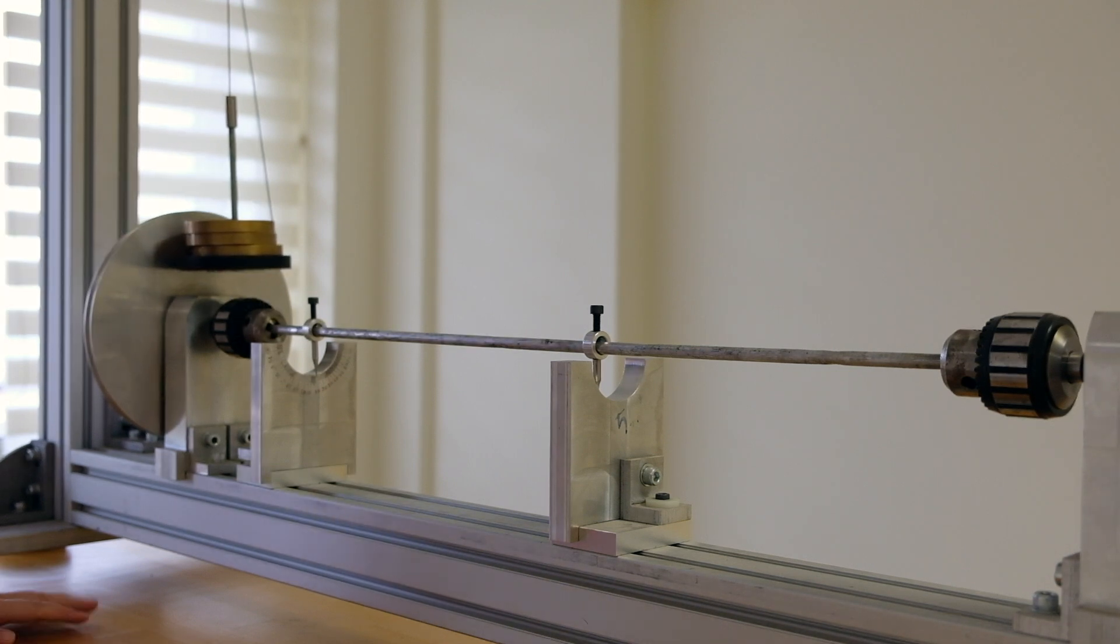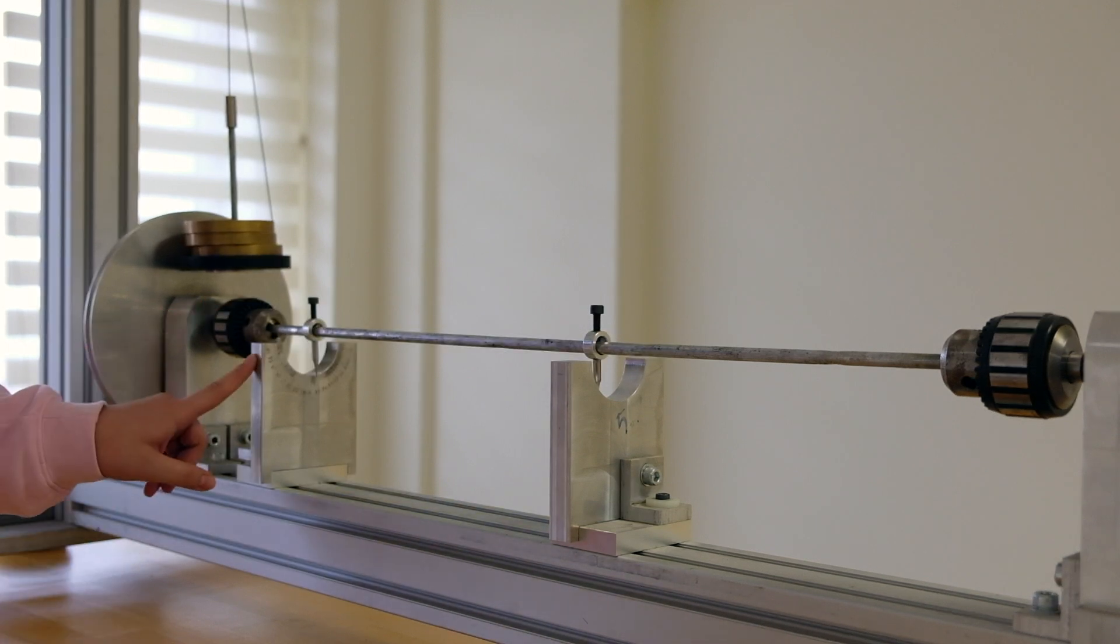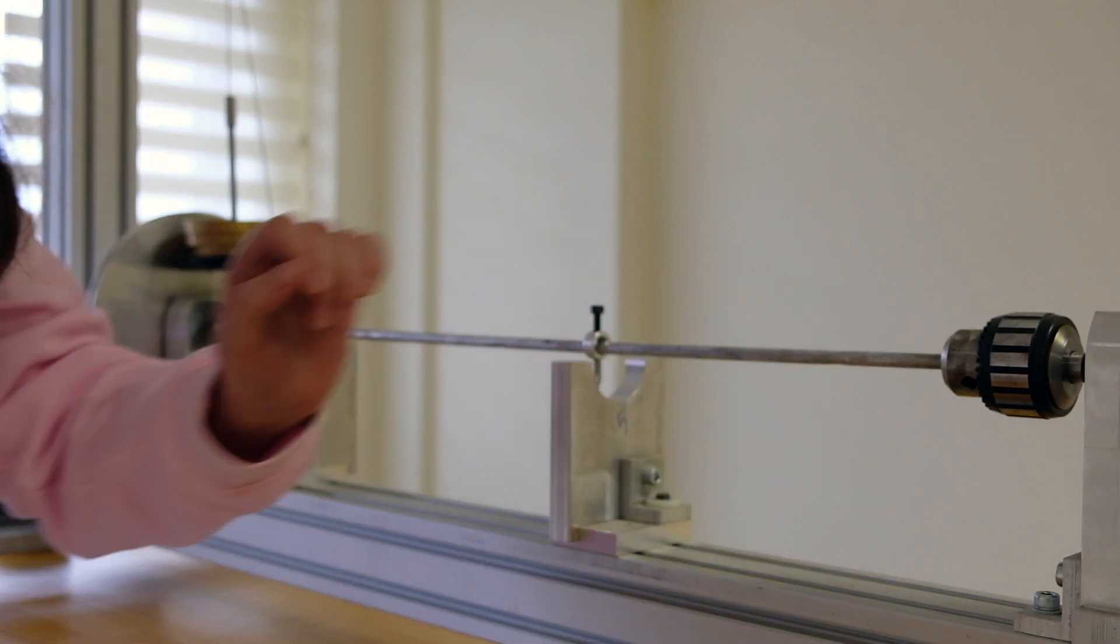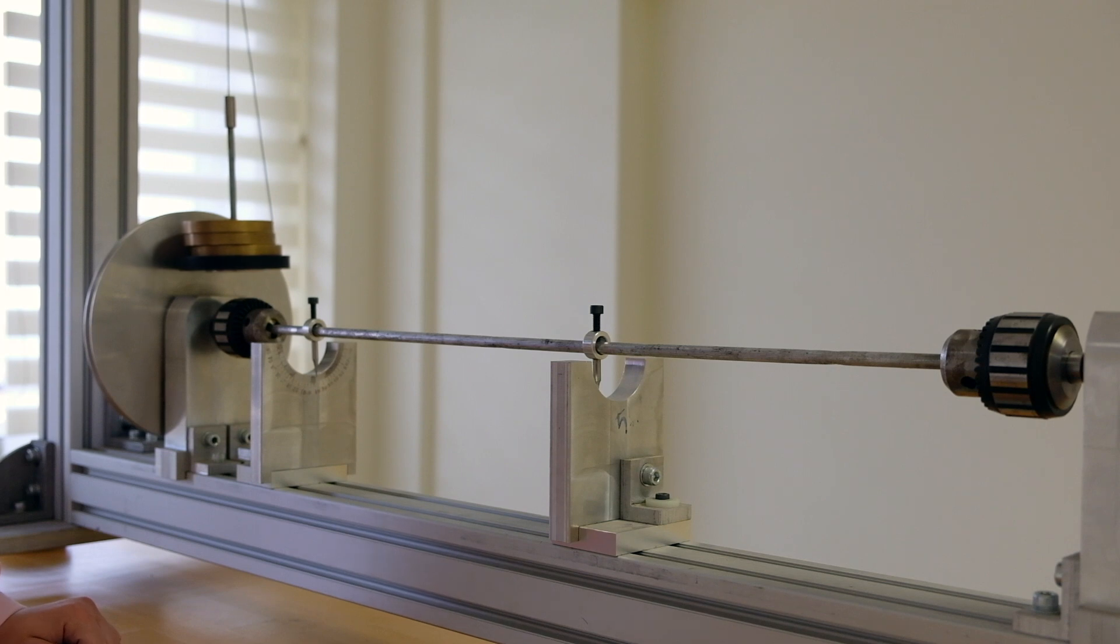After you are done with the setup, you will repeat the experiment for the second setup which has a brass shaft. The only difference is it only has one angle indicator, and you have to measure the distance between that angle indicator and the fixed end. And that's all.